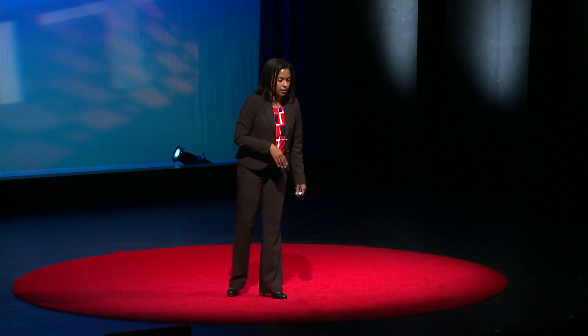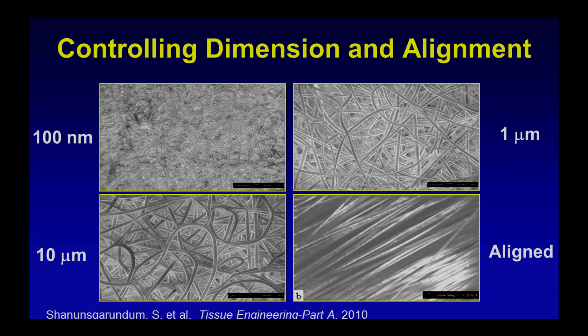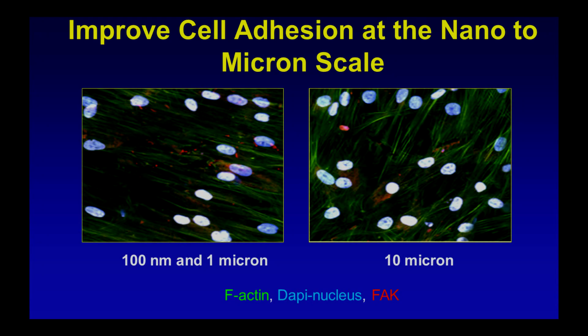We can arrange these fibers as random or aligned. All of that is important for cueing the cells. What we've been able to show is that the nanostructure and smaller micron-sized fibers affect the way cells attach to the substrate and improve attachment. The cell body is very organized on the nanostructure. If you go up to much larger micron-fiber structures, the cells start to look unorganized. So we improve attachment through nanostructure design.